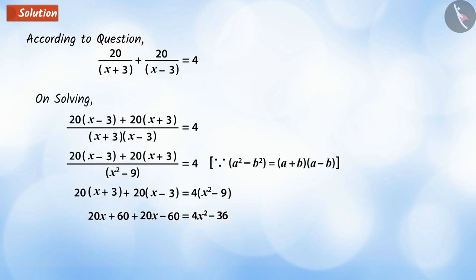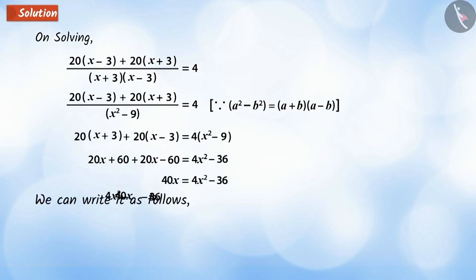we get 40x equal to 4x to the power of 2 minus 36. It is denoted by equation 1, which is a quadratic equation.